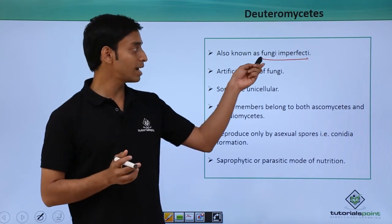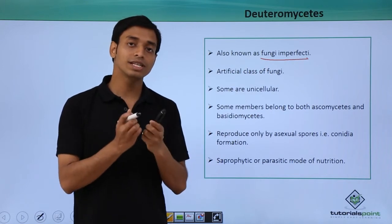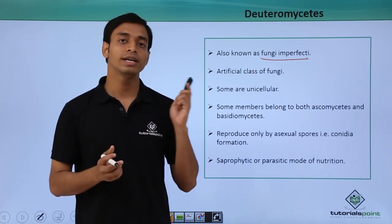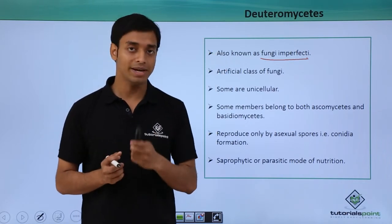Hence, you can understand why this name has been given—Fungi Imperfecti—because the sexual mode of reproduction is absent or has not been reported in this group of fungi known as Deuteromycetes.